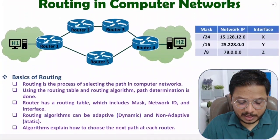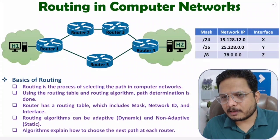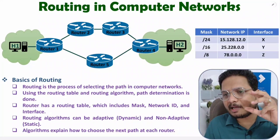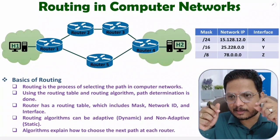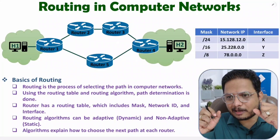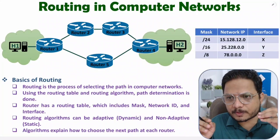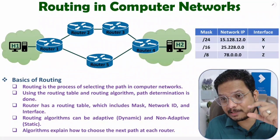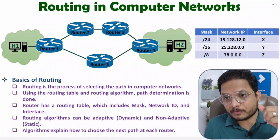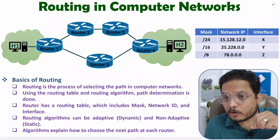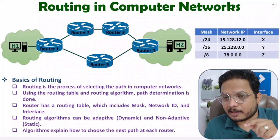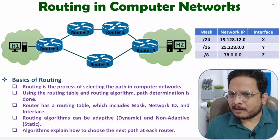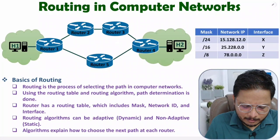Routing means path determination for frame forwarding. For example, if one device wants to forward a frame to a second device on the internet, there will be many intermediary hops. There can be many paths by which that frame can reach from source to destination, and which path is selected is defined by routing.